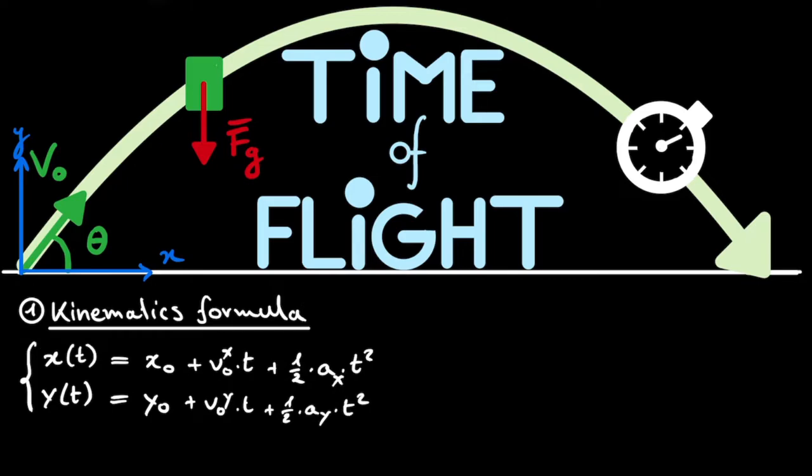Now for our specific situation, a lot of terms actually vanish. For instance, this x0 and y0, the initial position in the x and y-direction, can be set to 0 because we are starting out in the origin of our coordinate axis. And in the x-direction, we know that we don't have any acceleration, meaning that this Ax is also 0 and by extension this entire term drops out.